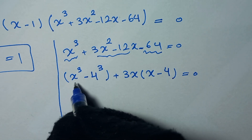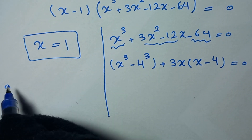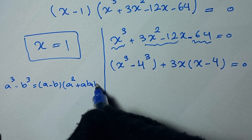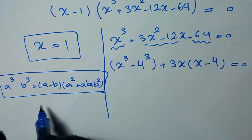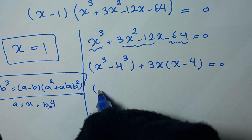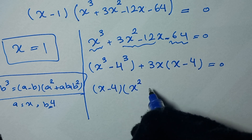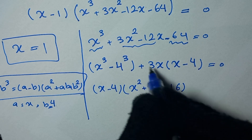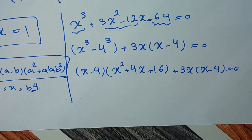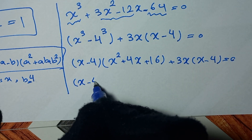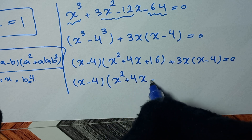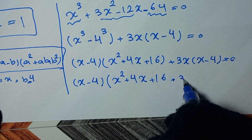This is in the form of a cubed minus b cubed, which equals a minus b times a squared plus ab plus b squared, where a is x and b is 4. So we can write x minus 4 times x squared plus 4x plus 16, plus 3x times x minus 4 is equal to 0. Factoring out x minus 4 gives x minus 4 times x squared plus 4x plus 16 plus 3x, giving x squared plus 7x plus 16 is equal to 0.